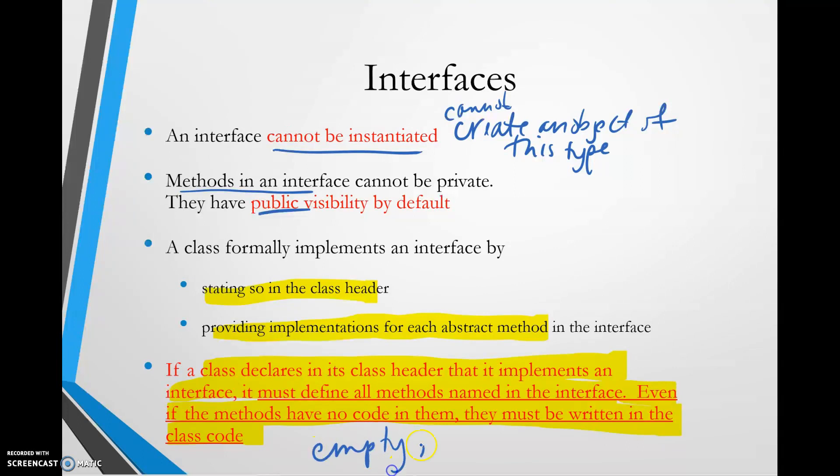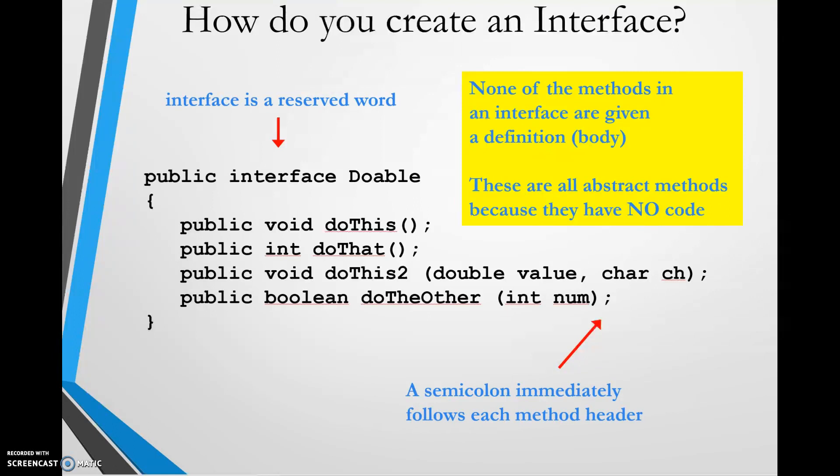Even if the methods have no code in them, they must be written in the class code. That's right, we would have to have empty method headers. Without having this in place, the code will not compile. Okay, so how do we actually create an interface? In this example we're just going to show you the general syntax of how an interface would look. So first of all, instead of saying public class we say public interface, and interface is a reserved word. And then in this case Doable is the actual name of the interface we created. Here I have four methods and these methods are all abstract, none of them have code. They have semicolons at the end of each line, and so what this tells Java is that I'm essentially telling you the four methods that we must write if we want to implement this interface.